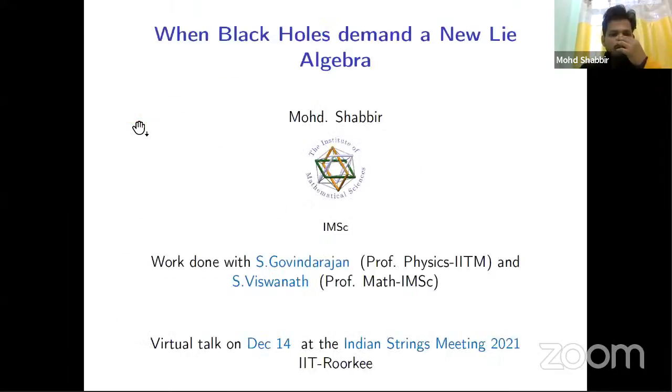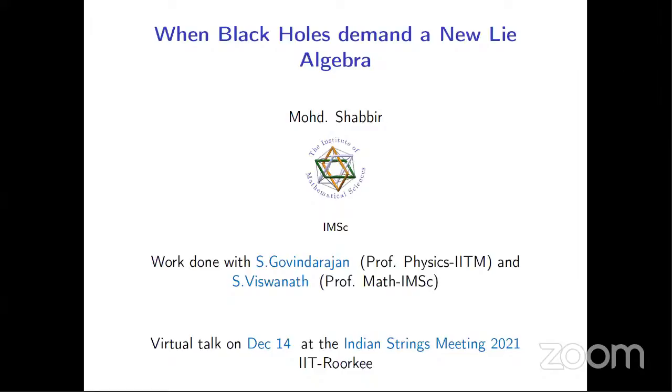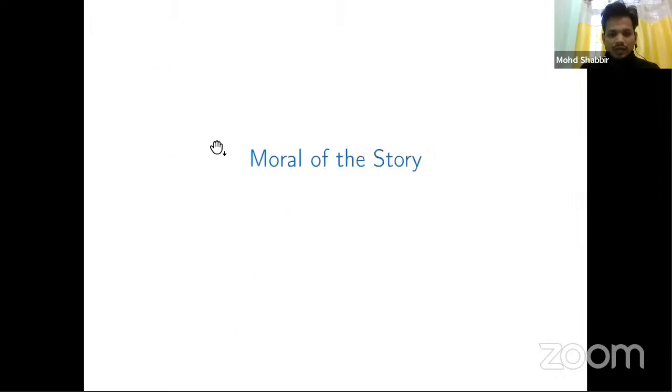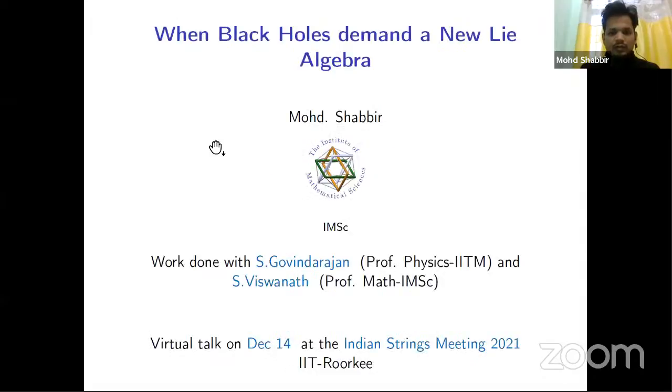So my talk is about when black holes demand a new Lie algebra. As you can see, my talk is going to be parallel both in physics and math, so I have to describe both of them. It's going to be hard for me to squeeze through a 15 minute window, but I'll try my best.